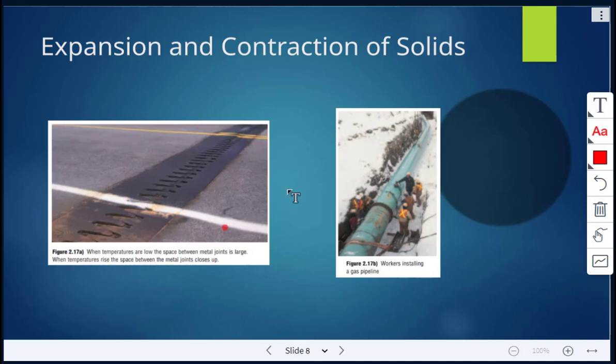Here we have these metal joints. This is showing on a road. When temperatures are low, the spaces between the metal joints will be large. But when temperatures rise, the spaces between the metal joints will close up.